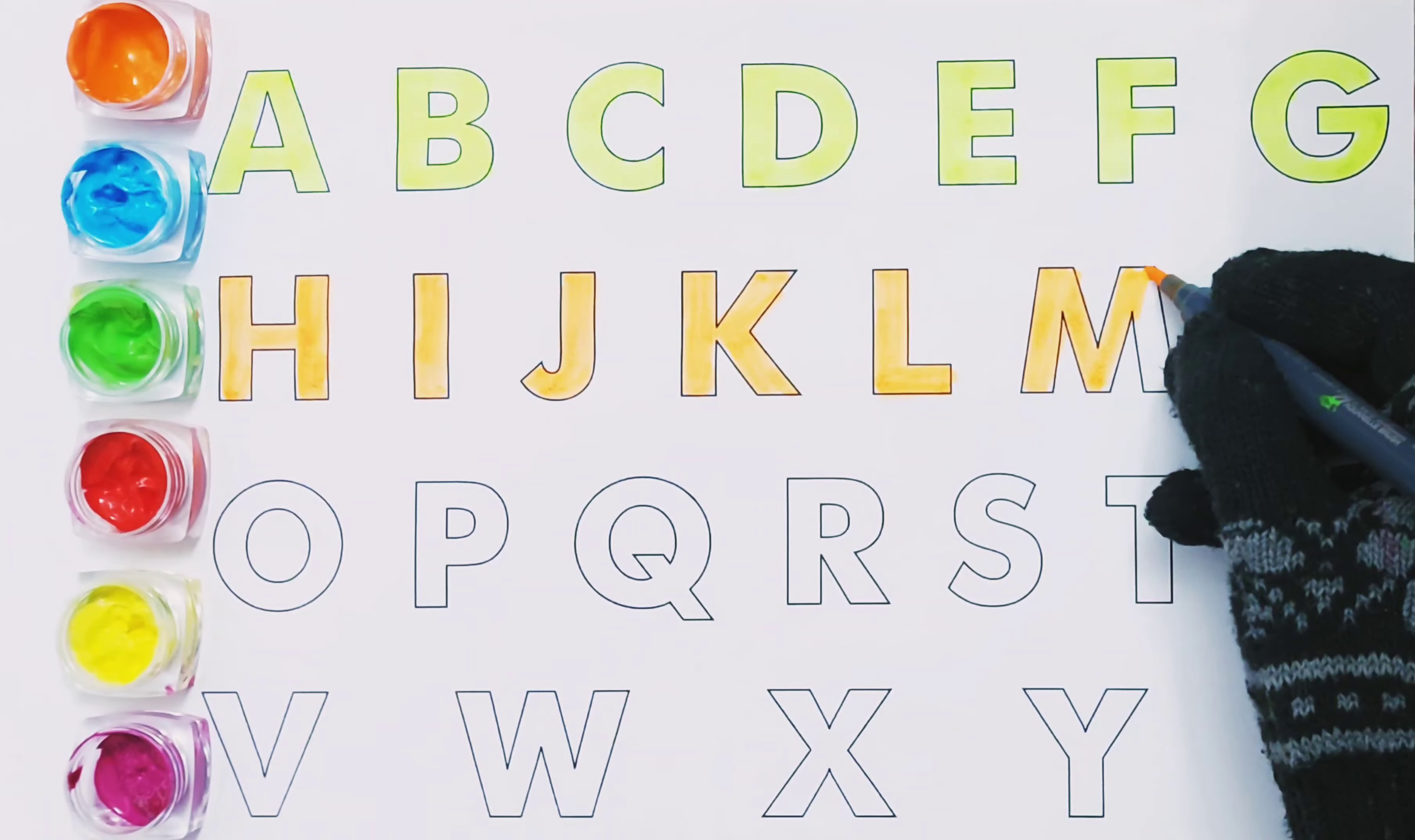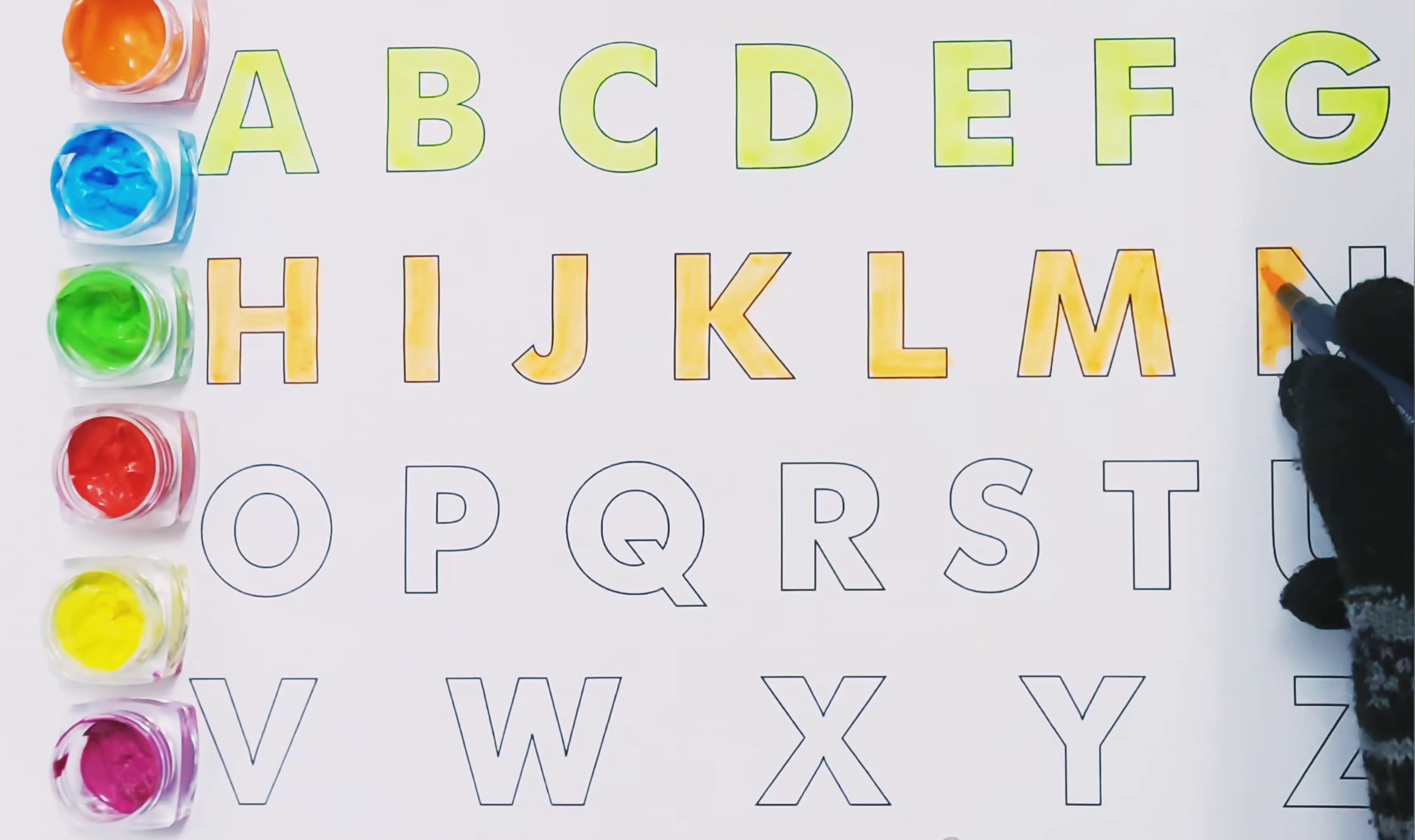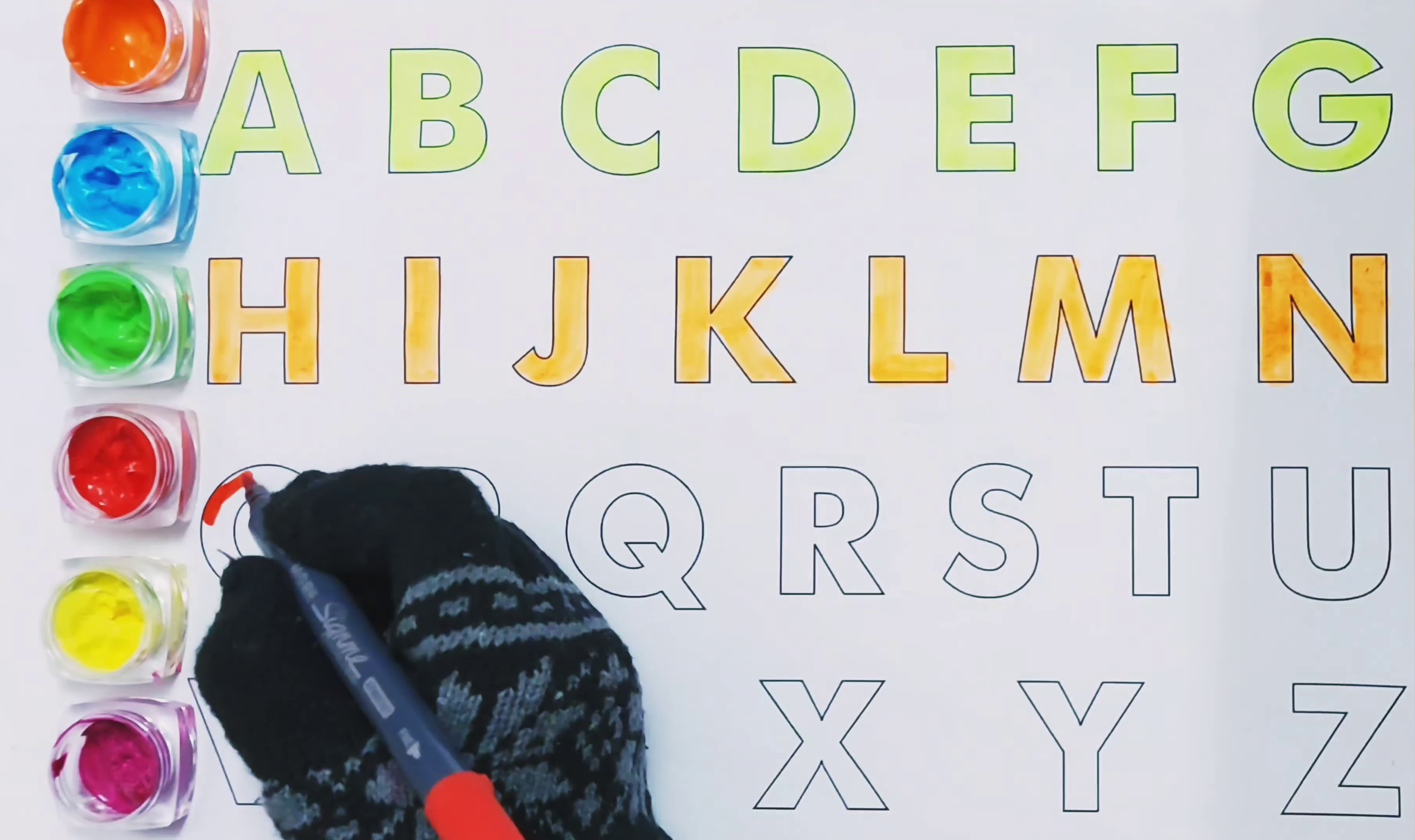N is for night. O, P, Q, R, S, T, U, V, W, X, Y and Z. O is for orange.